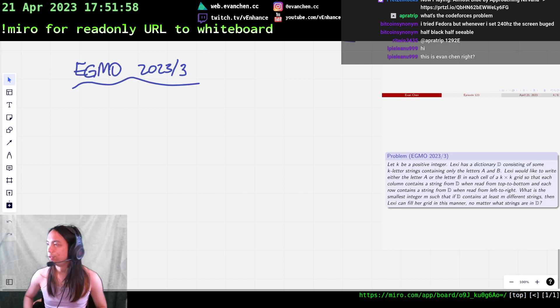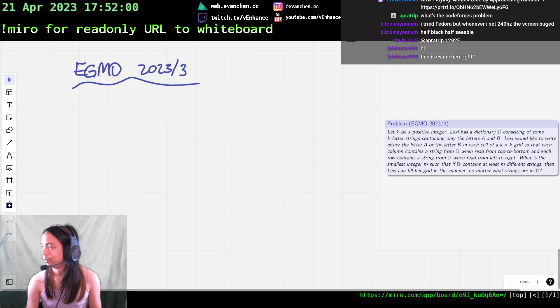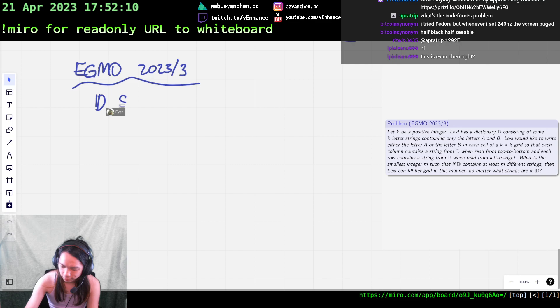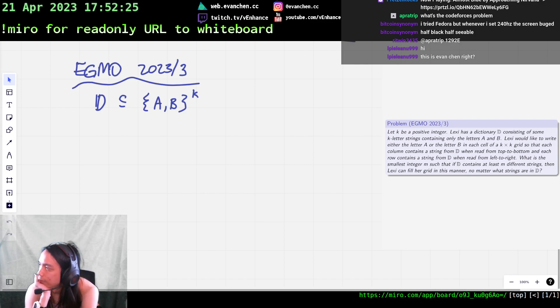All right, welcome back. So this is a problem about A, B to the k, I guess. You're given a dictionary of words in A and B, and you want to put them in a grid such that every row and every column contains a word. And the problem is, how many words do you need to guarantee this is possible?